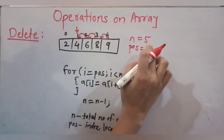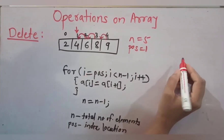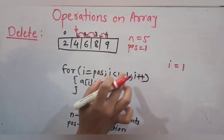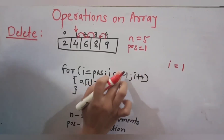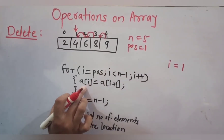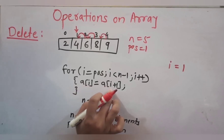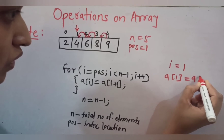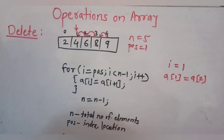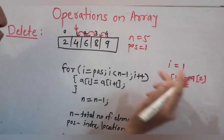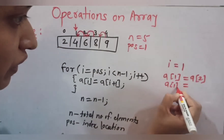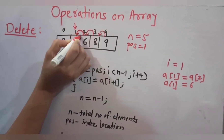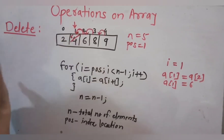Initially position=1 and n=5, so i starts at 1. The condition is i < n-1, that is 1 < 4, which is true. So we perform a[1] = a[2]. Since a[2] is 6, a[1] becomes 6 — meaning 6 is copied over the position where 4 was.